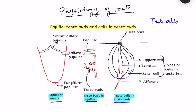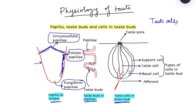Let us start from the papilla. This is a schematic diagram showing the dorsal surface of the tongue, and on the tongue we have three types of papilla. One is the circumvallate papilla, which is present on a V-shaped area at the posterior side of the tongue. Then there is the foliate papilla, present on the posterior edge and lateral border of the tongue. The last one is the fungiform papilla, which is present on the anterior aspect of the tongue.